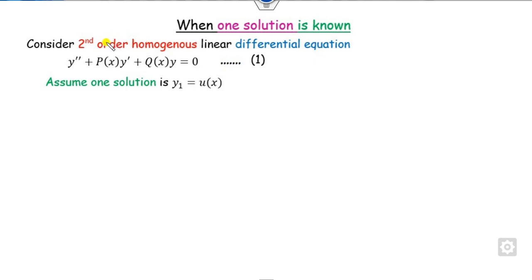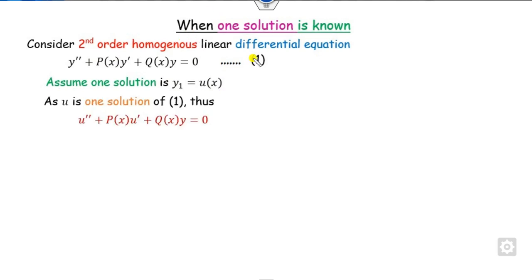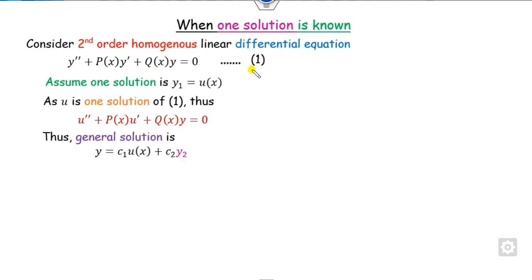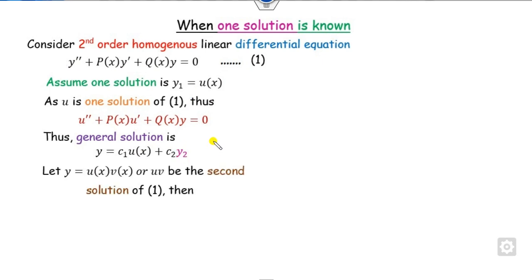As we know, the second order differential equation has two solutions: y1 and y2. Assume we have one solution y1, which is u(x), given to us. It must satisfy equation number 1, that is u'' plus the remaining terms. Our general solution is c1·y1, which is u, plus c2·y2. Our target is to find y2, so we assume y2 is the product of u and v, so that y1 and y2 are linearly independent.